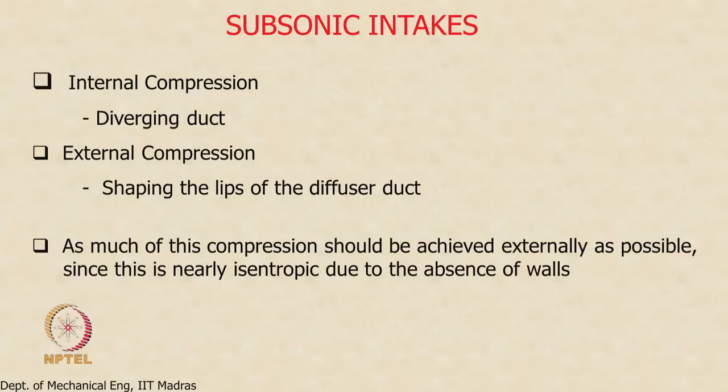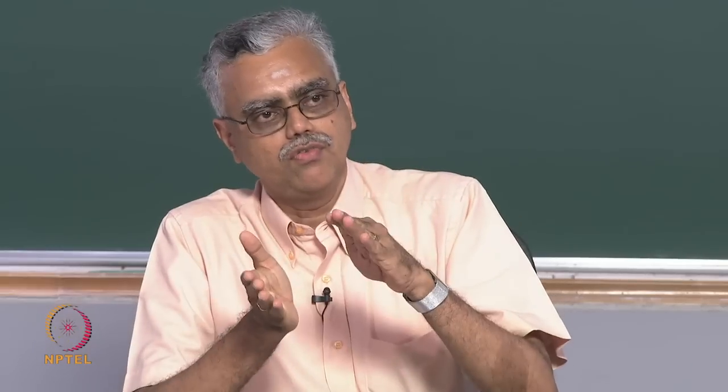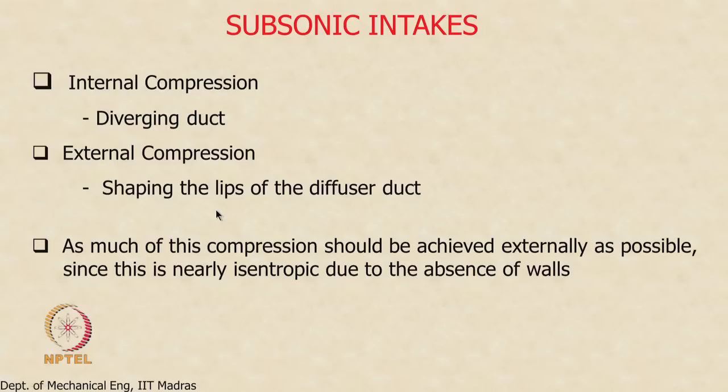Since we are decelerating the air and converting momentum to pressure, we are talking about a compression process. Intakes generally achieve compression in two modes. One is through internal compression — for subsonic flow through a diverging passage, the velocity decreases and static pressure increases automatically. The other is to shape the diffuser duct itself so that the air stream approaches in a certain way, achieving external compression.